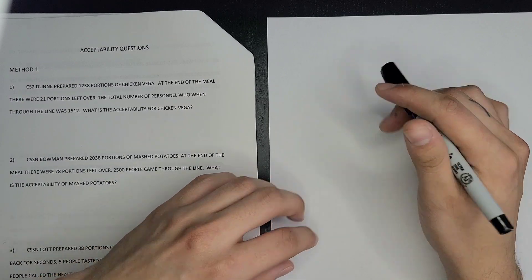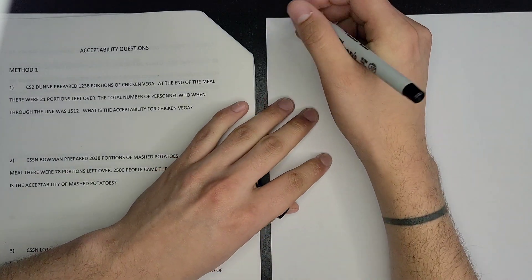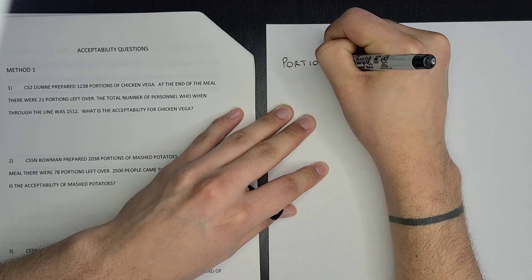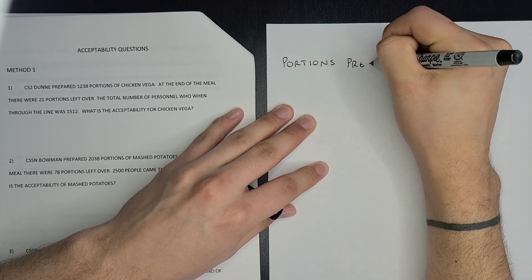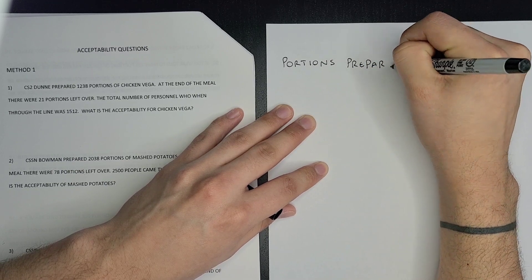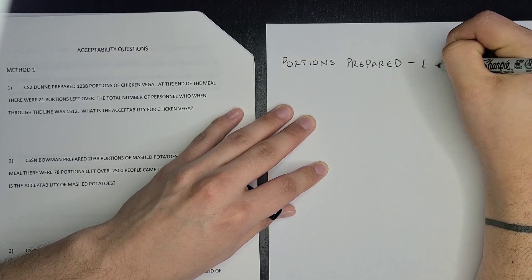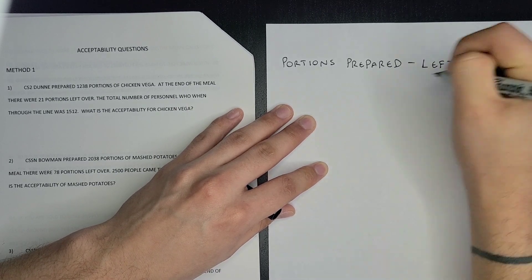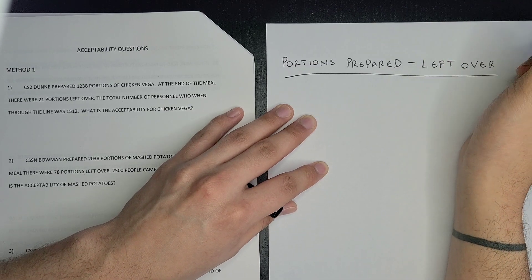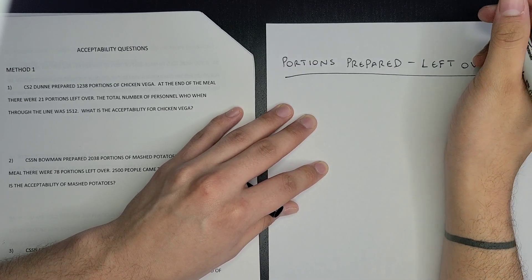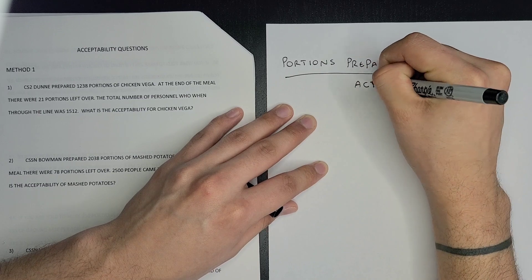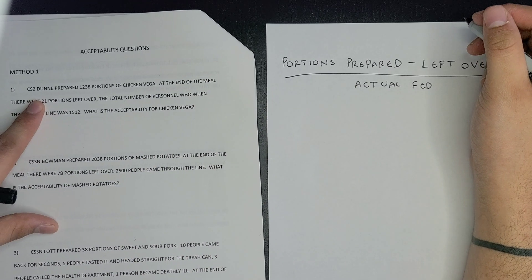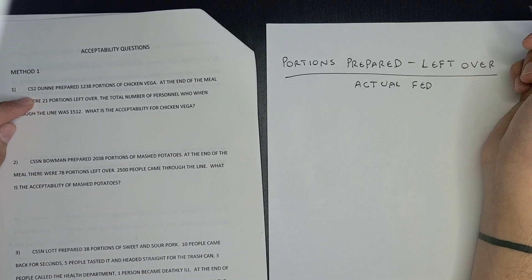The formula for the first method is: portions prepared minus your leftovers, divided by your head count or actual fed. This first problem says CSU Dining prepared one thousand two hundred thirty-eight portions of chicken.